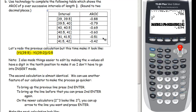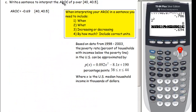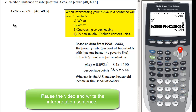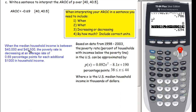Now let's write a sentence for the interval 40 to 40.5. When the median household income is between $40,000 and $40,500, the poverty rate is decreasing — because the average rate of change is negative — at an average rate of 0.69 percentage points for each additional $1,000 in median household income.